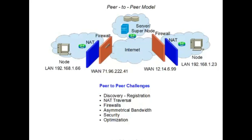In access networks like DSL and cable, the upstream bandwidth tends to be on the order of one-tenth of the downstream bandwidth. Security is another issue for peer-to-peer services — we need to traverse the NAT and firewall, which means in some sense we're going to poke holes in them and defeat some of their characteristics, and in so doing we have the potential to open up security issues for our local area networks.